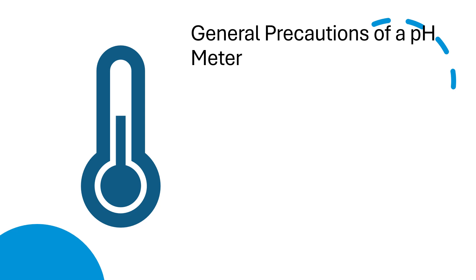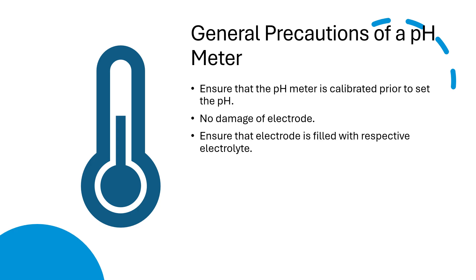Now let's discuss what precautions should be taken while handling the pH meter. Ensure that the pH meter is calibrated prior to adjusting the pH. Prior to taking or adjusting the pH, the pH meter should be calibrated. Check for no damage to the electrode. Check the electrode carefully prior to starting the measurement—there should not be any cracks. Ensure that the electrode is filled with respective electrode light. Generally, 3 molar KCl is used.